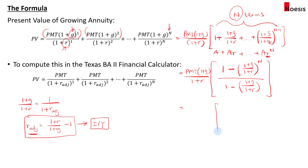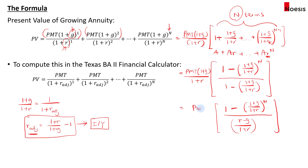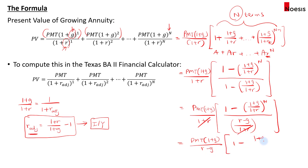Simplifying the formula: the numerator is [1 minus (1+G)/(1+R) to the power of n], and the denominator becomes (1+R minus 1+G) over (1+R), which is (R minus G)/(1+R). Combined with the PMT times (1+G)/(1+R) factor, the final formula becomes: PMT × (1+G)/(R−G) × [1 − (1+G)/(1+R)^n].